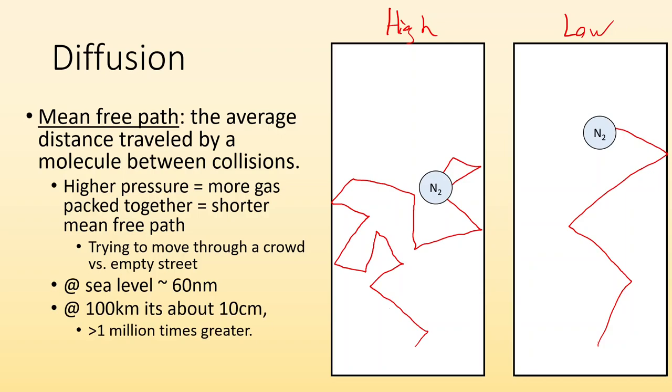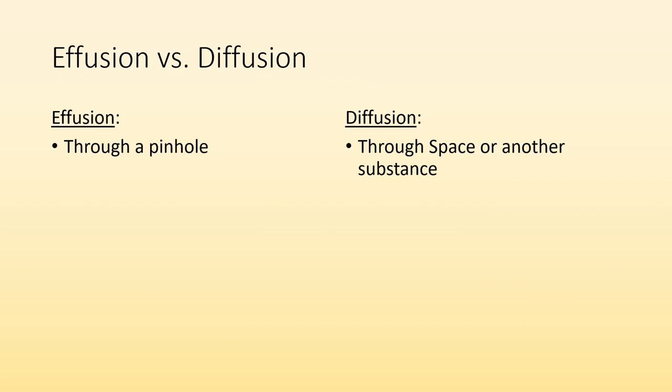So at sea level, the mean free path is roughly 60 nanometers. And at 100 kilometers of elevation, it's about 10 centimeters, which is more than a million times greater pressure. So yeah, pressure, big difference.